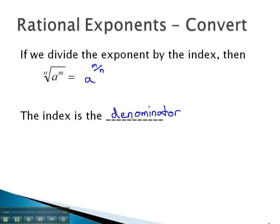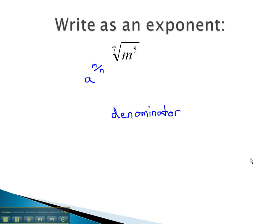We can use this property to make conversions between radicals and exponents. For example, we could write this expression with a rational exponent instead of a radical. The index, 7, will become the denominator, giving us 5 sevenths.